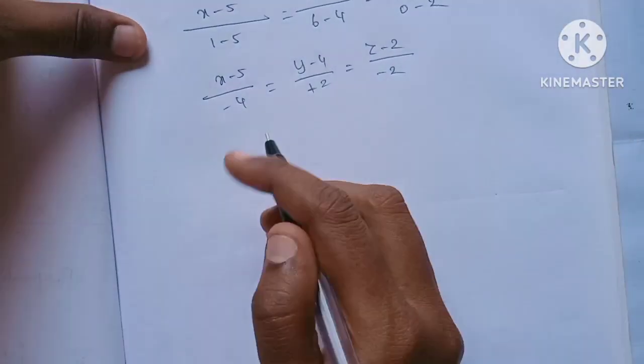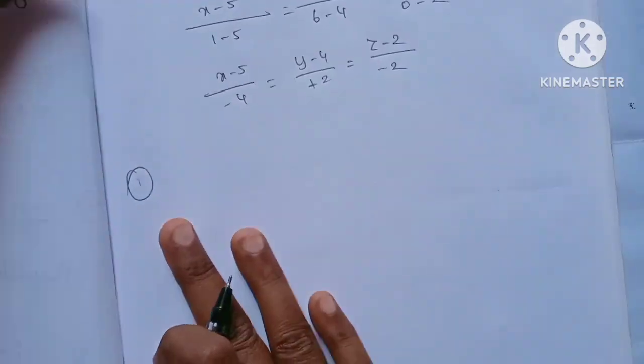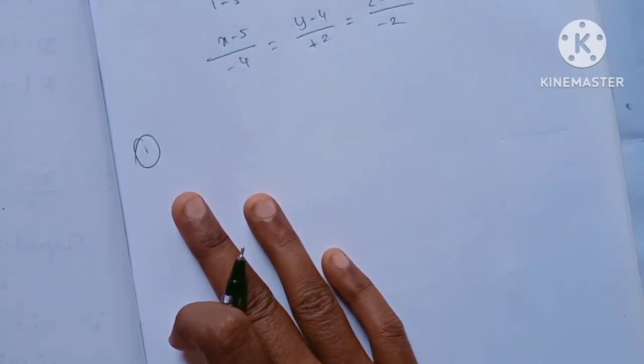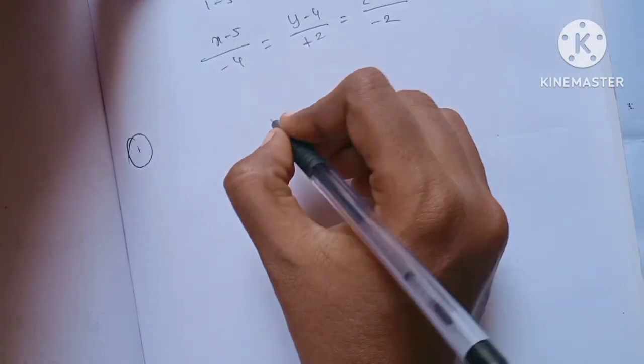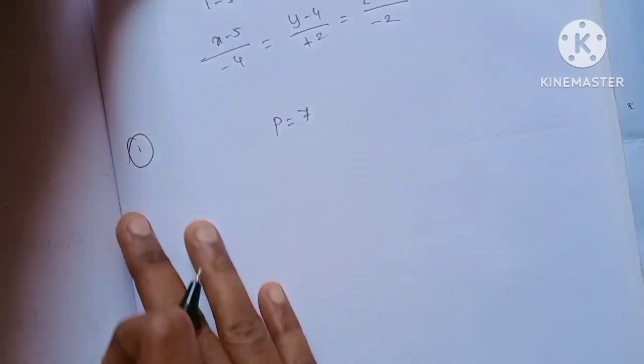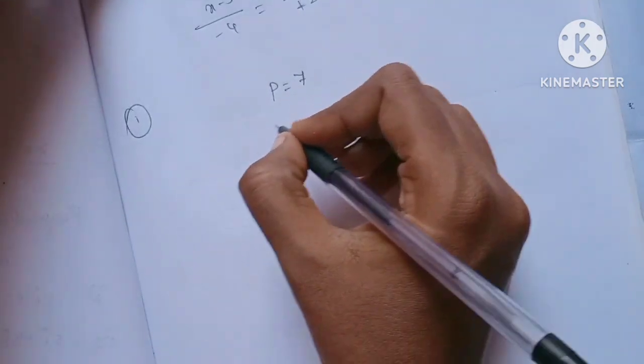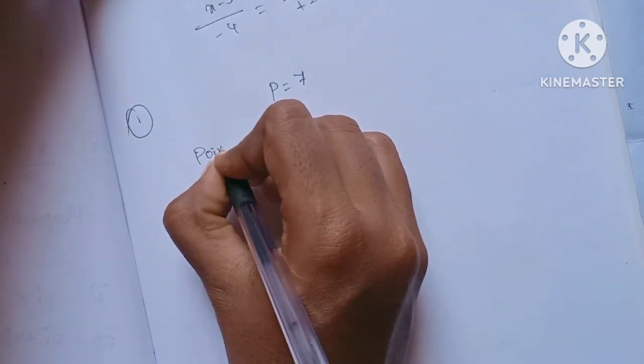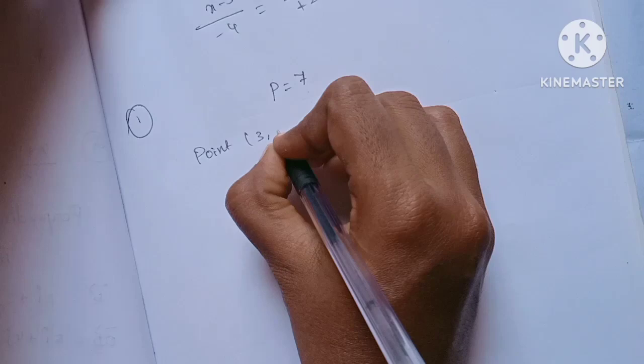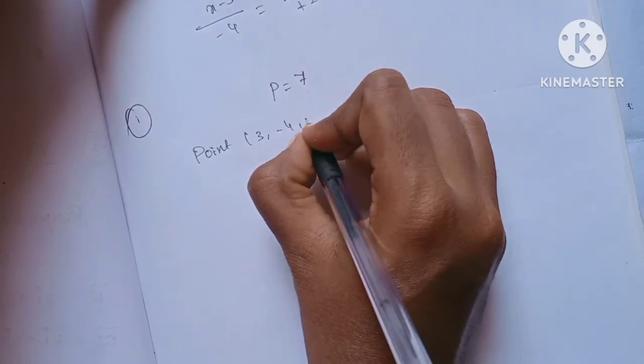Looking at the distance, we denote it as P. So the distance is 7. Next, our direction ratios are 3, -4, 5.